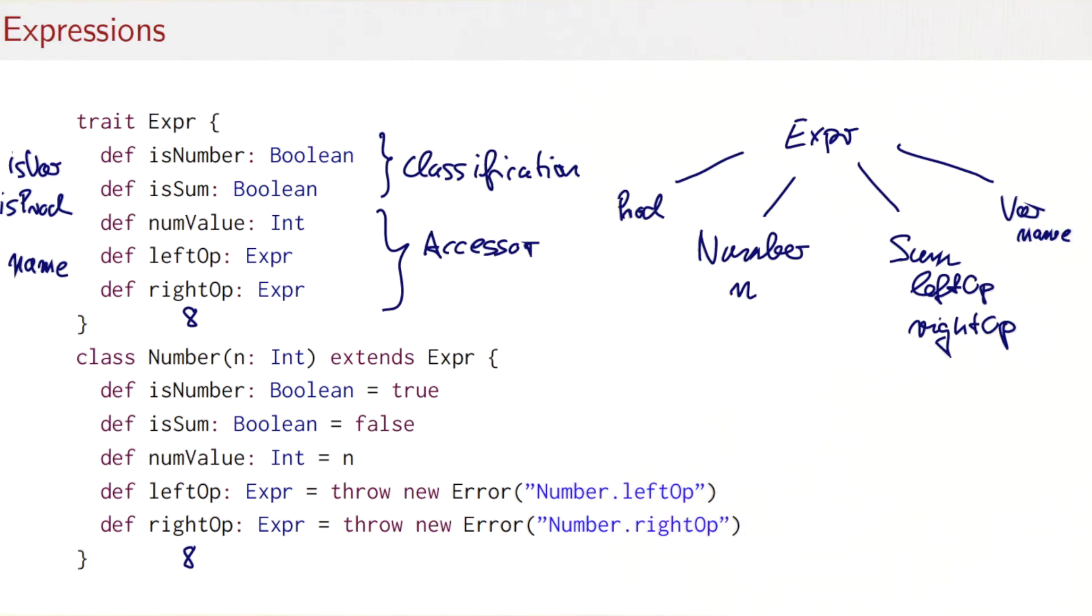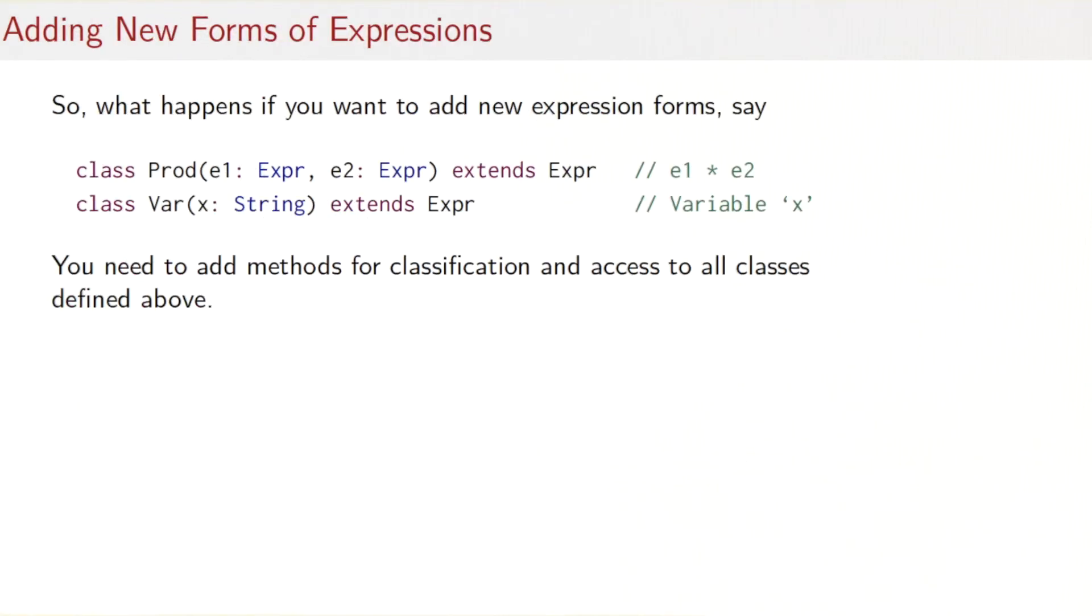And then of course we have the two new classes, Product and Var, which also have to implement all of the eight methods now: isNumber, isSum, isVar, isProduct, numValue, left operand, right operand, and name. So that means overall we have five classes, each of them implementing eight methods for a total of 40 methods. Our previous solution had three classes, each of them implementing five methods for a total of 15 methods. So the answer to the question was, we have 25 new methods.